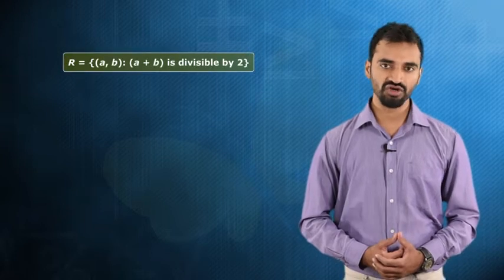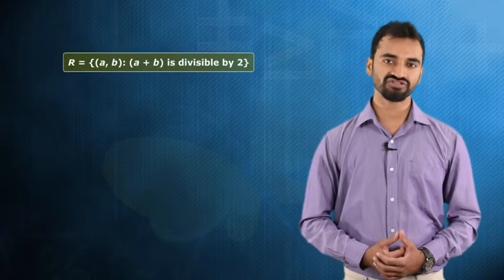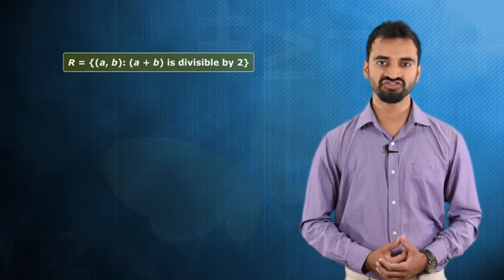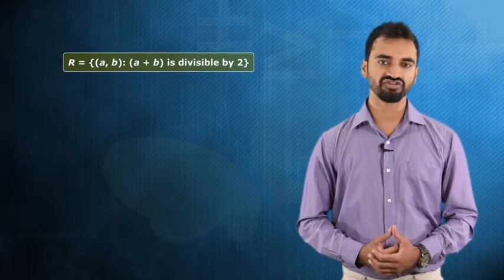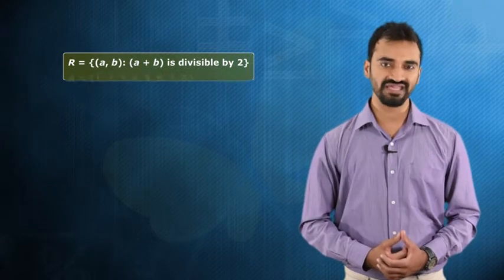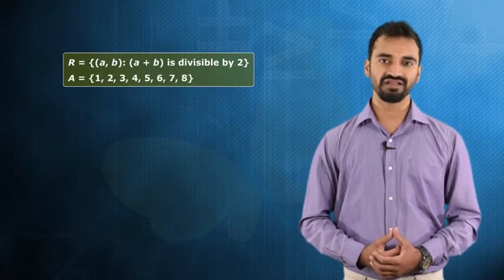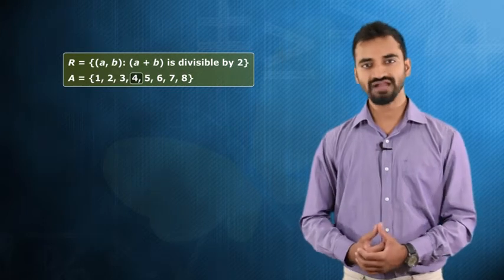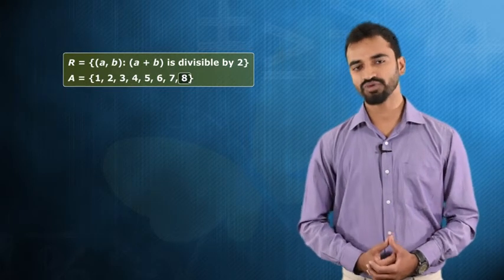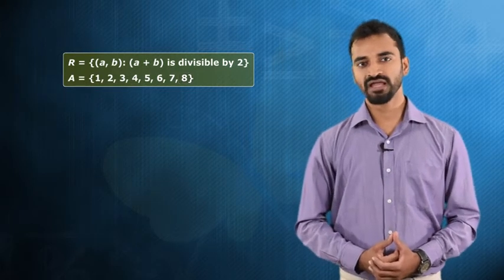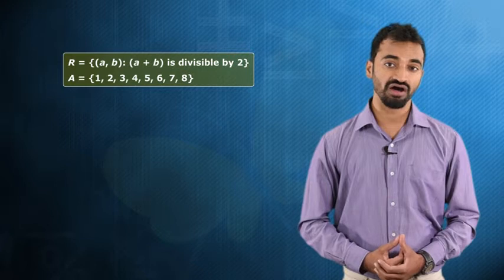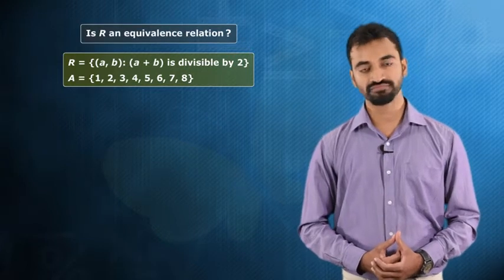Let's define a relation R which contains (a, b) such that a plus b is divisible by 2. This relation R is defined on a set A which contains elements 1, 2, 3, 4 and so on up to 8. We have to find out whether this relation R is an equivalence relation or not.